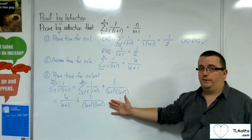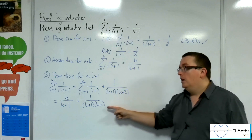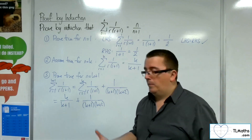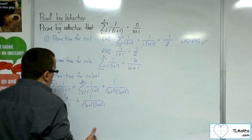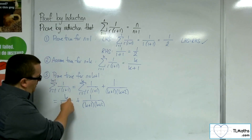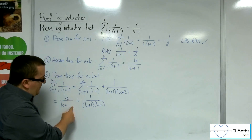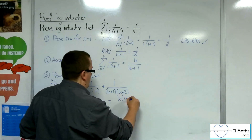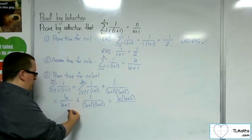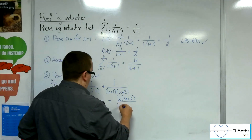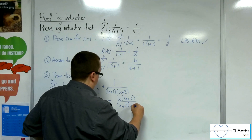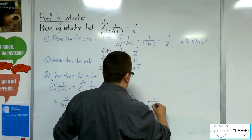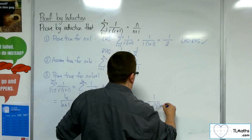To show that this is equivalent, we need to add the two fractions together. They don't currently have a common denominator, so we multiply the first fraction top and bottom by k plus 2 to get a common denominator. That gives us k times k plus 2 over k plus 1 times k plus 2, plus 1 over k plus 1 times k plus 2.